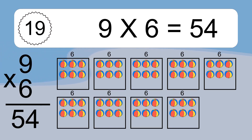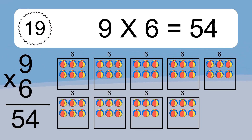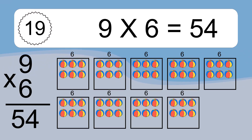9 times 6 equals what? We have 9 boxes, and each box has 6 colorful balls inside. If you count all the balls in all the boxes together, you will have 9 times 6 balls. This equals 54 balls.